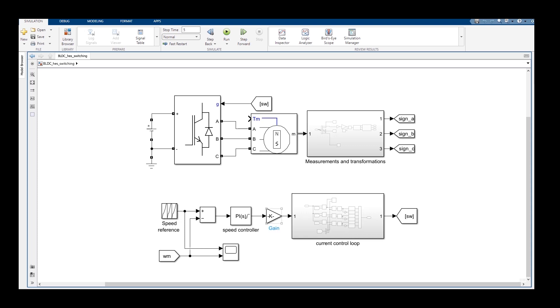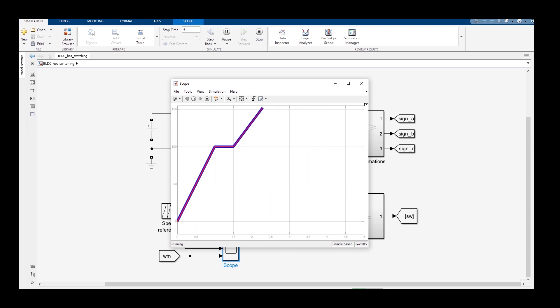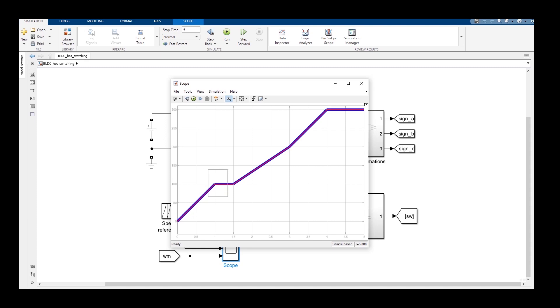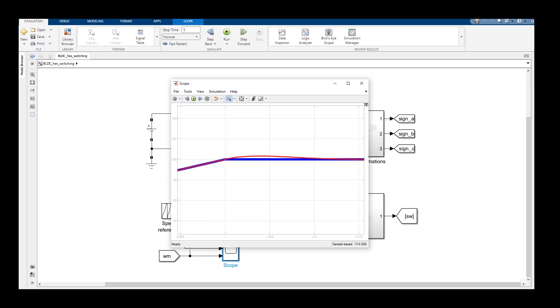So this then goes into the current control loop that we built in the previous video. And then we get the switching signals. And here we have the response of the speed tracking. So here if you zoom in, for example here, you will see this blue line is the reference and the red line is the actual speed. And here we see the small overshoot as expected.